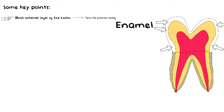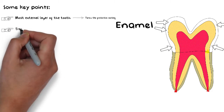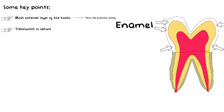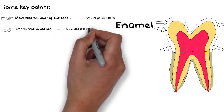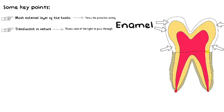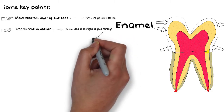Enamel is not white as is commonly believed — it is actually translucent in nature. Translucent means it allows some light to pass through, but not all of it. A transparent object, like a clear piece of glass or a car window, allows all light to pass through. The enamel is translucent and does not allow us to completely see through it, but it does allow the internal color of the tooth to reflect through.